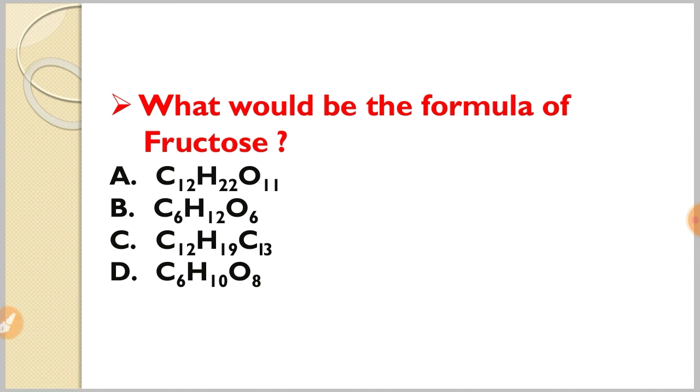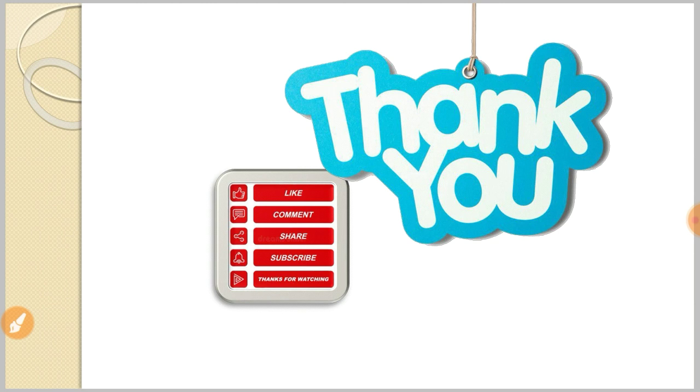What would be the formula of fructose? The options are: A) C12H22O11, B) C6H12O6, C) C12H19Cl3, D) C5H10O8. The correct answer is B, C6H12O6. This is the chemical formula for glucose, fructose, and other monosaccharides.